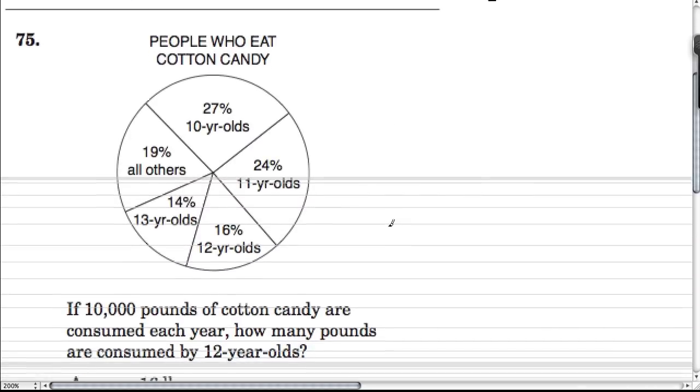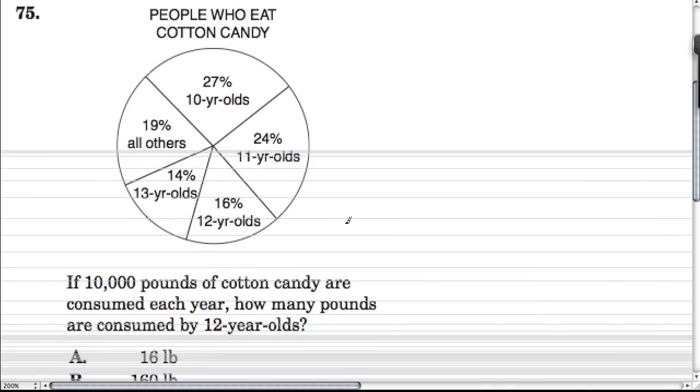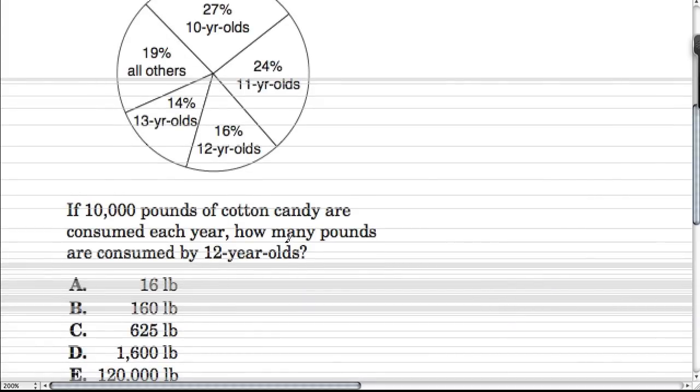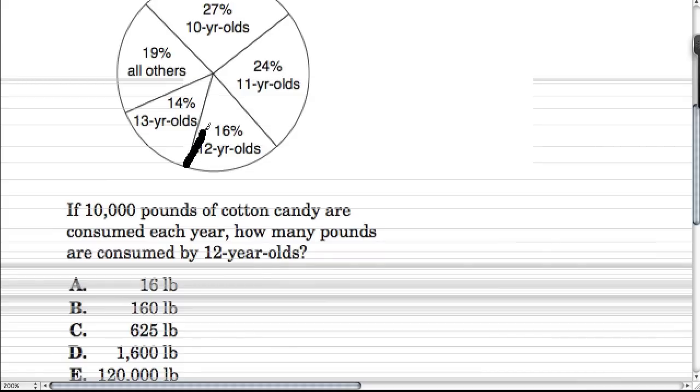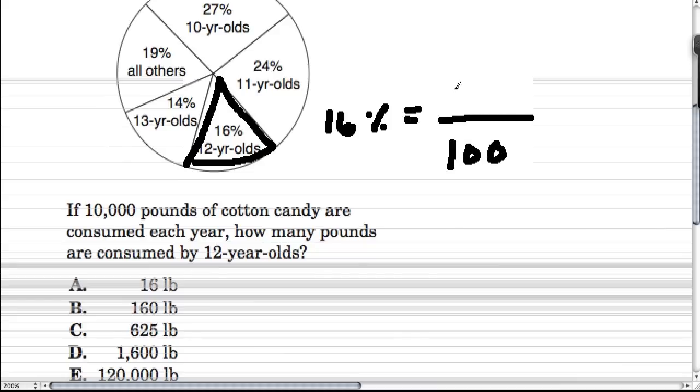Up next, we have a circle graph where people who eat cotton candy, and they tell us that 10,000 pounds of cotton candy are consumed each year. How many pounds are consumed by 12-year-olds? Well, here's the 12-year-olds right here. 16 percent, that means for every 100, 16 12-year-olds prefer cotton candy.